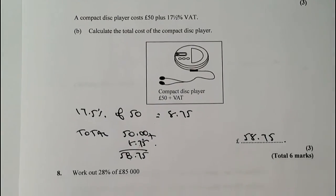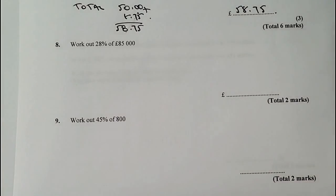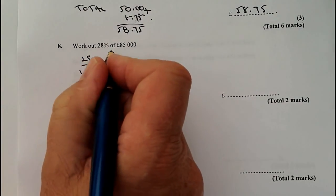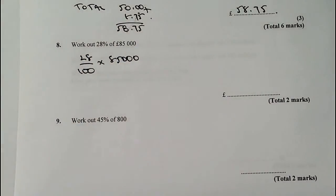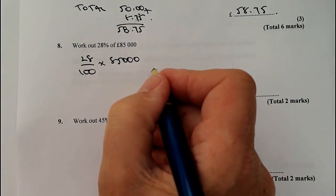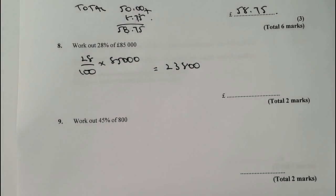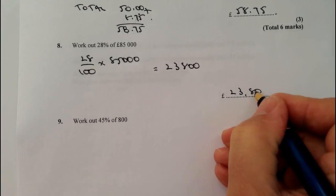Next, we're going to look at working out 28% of 85,000. Don't get too concerned about big numbers and lots of zeros — with a calculator you can just plug the numbers straight in. So we've got 28%, which is 28 out of 100, and 'of' means multiply 85,000. That will give you a total of 23,800. So 28% of £85,000 is £23,800.